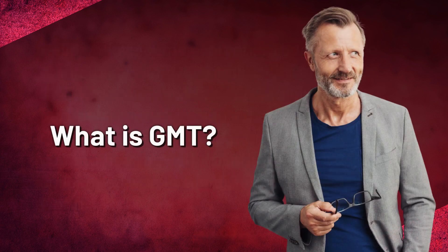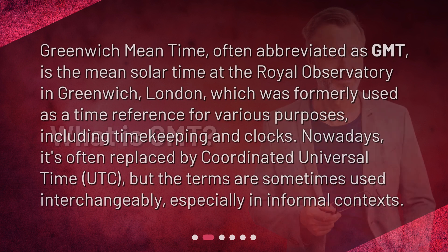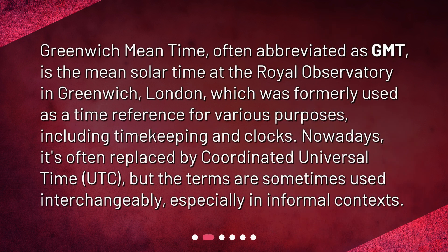What is GMT? Greenwich Mean Time, often abbreviated as GMT, is the mean solar time at the Royal Observatory in Greenwich, London, which was formerly used as a time reference for various purposes, including timekeeping and clocks. Nowadays, it's often replaced by Coordinated Universal Time, UTC, but the terms are sometimes used interchangeably, especially in informal contexts.